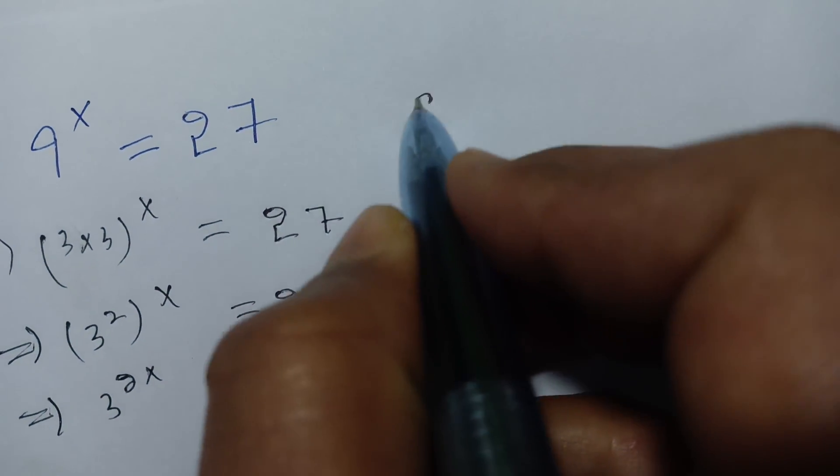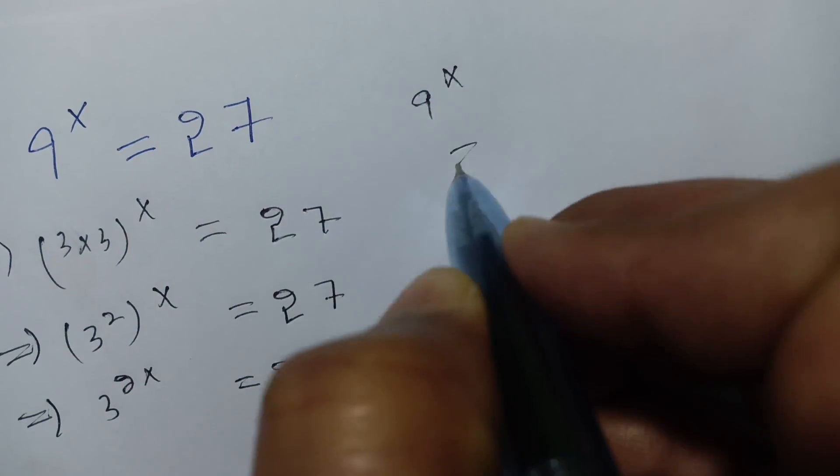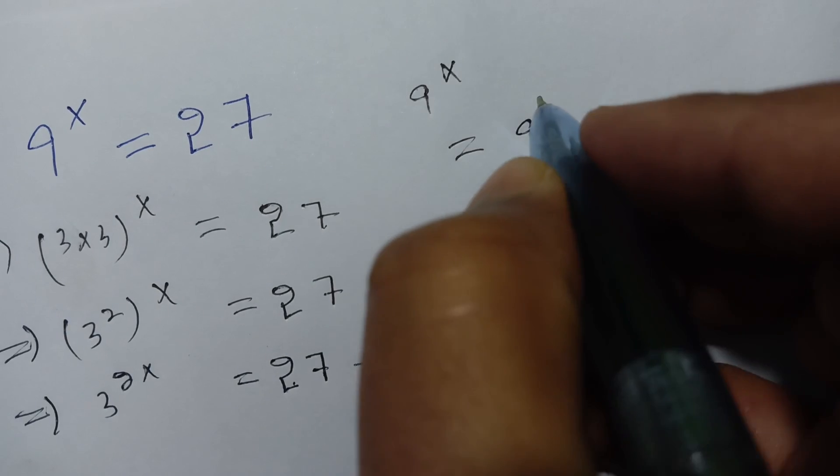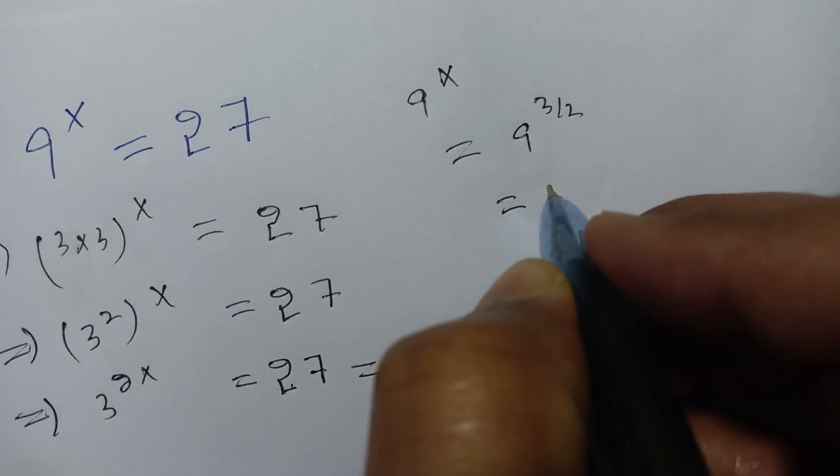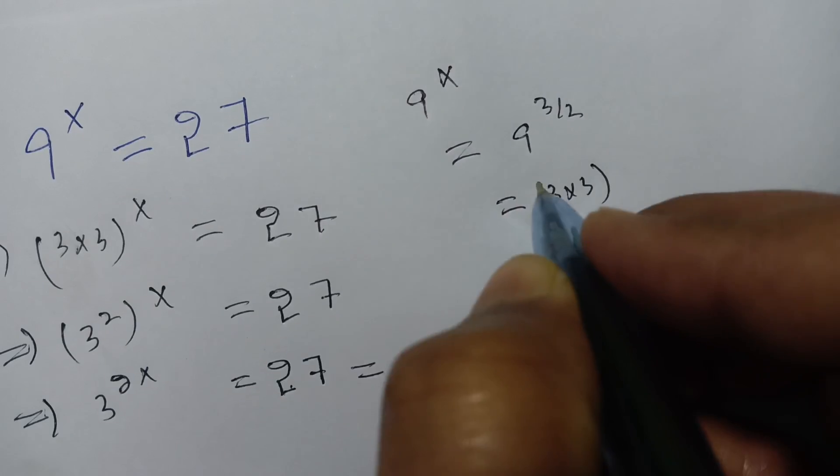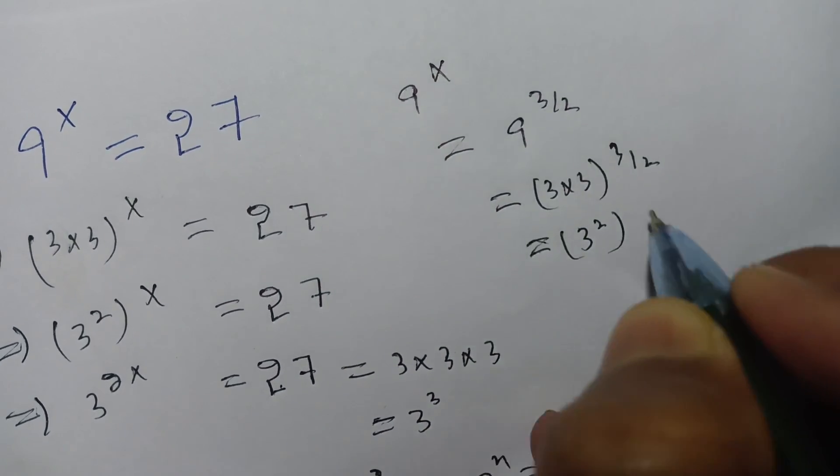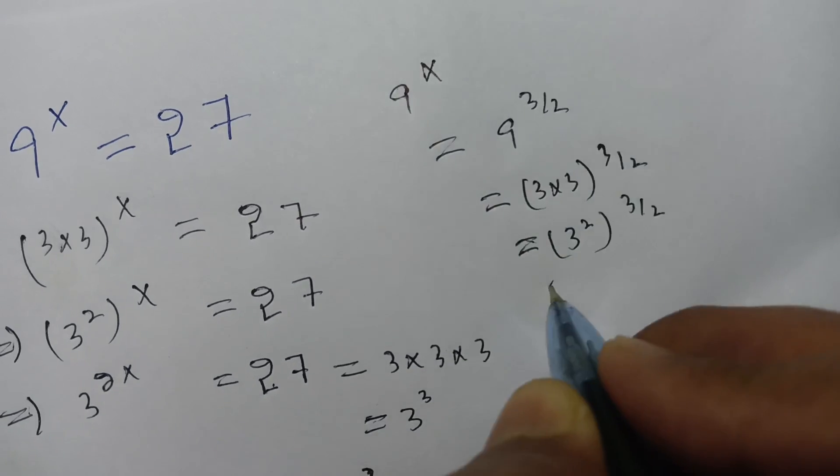Taking the left-hand side, we get 9 to the power x. In place of x we put 3 by 2. And 9 can be written as 3 times 3 to the power 3 by 2, is equal to 3 squared to the power 3 by 2.